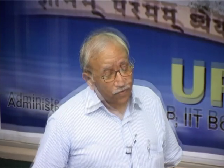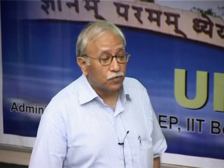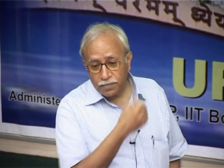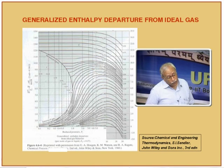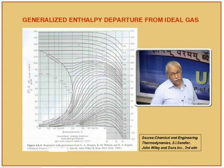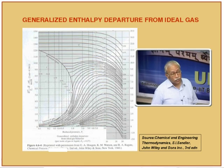From ideal gas enthalpy, charts were calculated to find actual enthalpies. The difference between actual enthalpy and ideal gas enthalpy, normalized with the critical temperature, is known as the departure function. These plots are made with respect to pressure on the abscissa and temperature as a parameter, available for the whole range. This is the dome representing saturated liquid, the critical point, and saturated vapor on the other side.